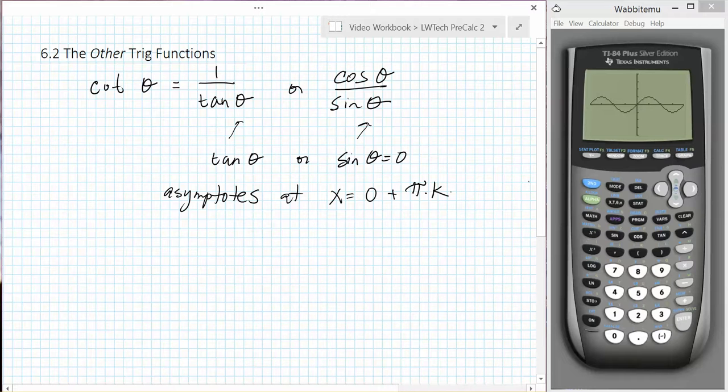What other properties do we know? Well, let's sketch this. Zero, pi, 2 pi, negative pi, negative 2 pi.